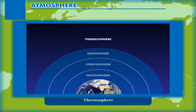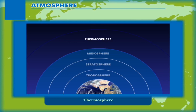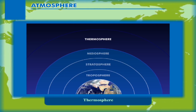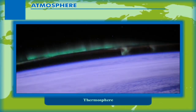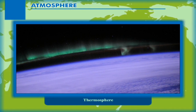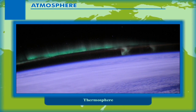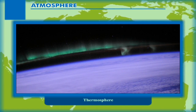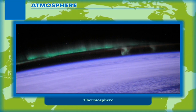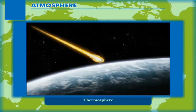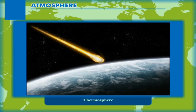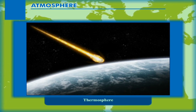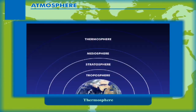Thermosphere: The thermosphere lies beyond the mesosphere. In this layer, the temperature increases rapidly with the increase in height above mean sea level. It is estimated that the temperature at the upper limit of the thermosphere reaches more than 1500 degrees Celsius. However, the air is very thin and holds little heat, so one does not feel warm even at such a high temperature. The thermosphere protects us from meteorites and obsolete satellites, as the high temperature can burn them before they reach the earth.